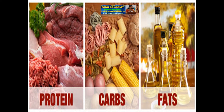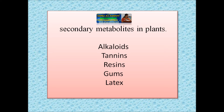In this lesson we are going to learn about food materials like carbohydrates, fats, and proteins. These are the primary metabolites. There are also secondary metabolites such as alkaloids, tannins, resins, gums, latex, etc.